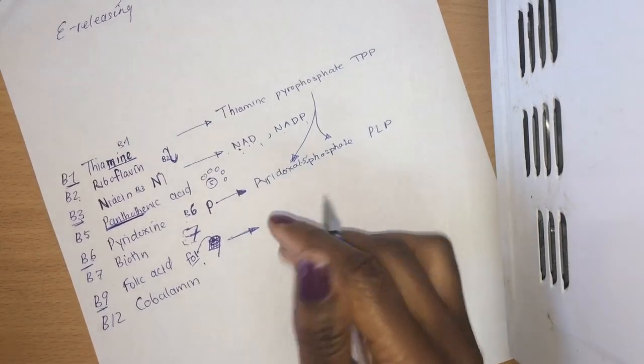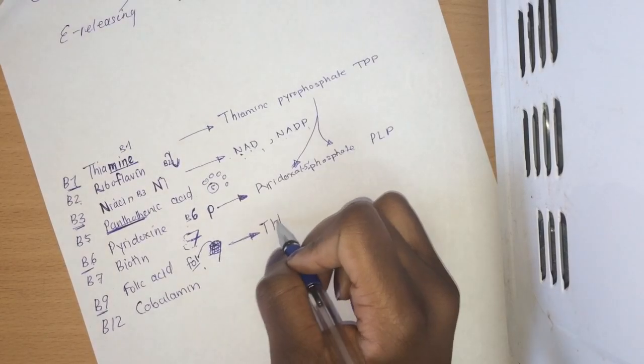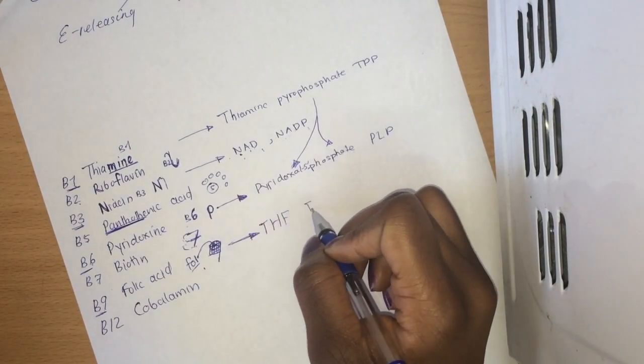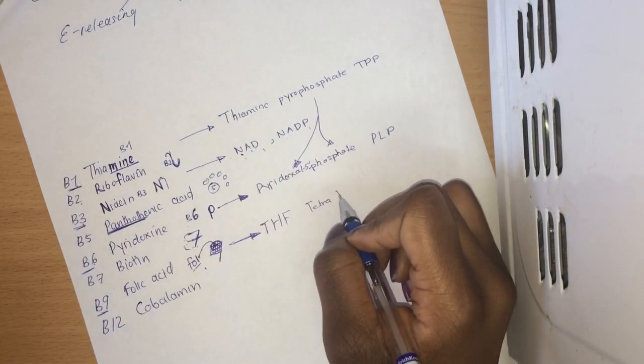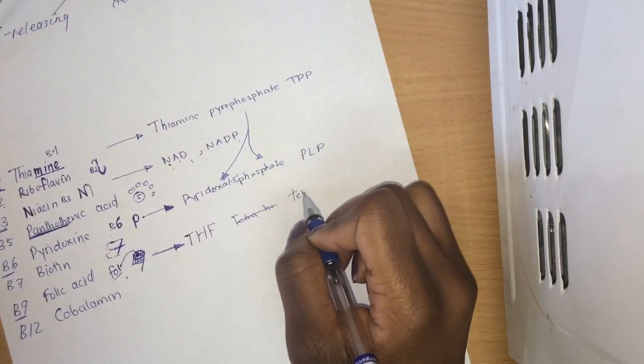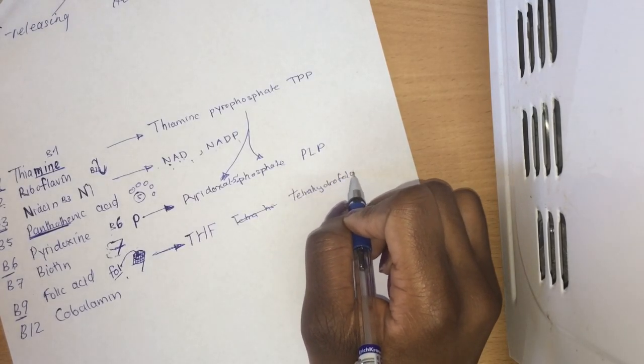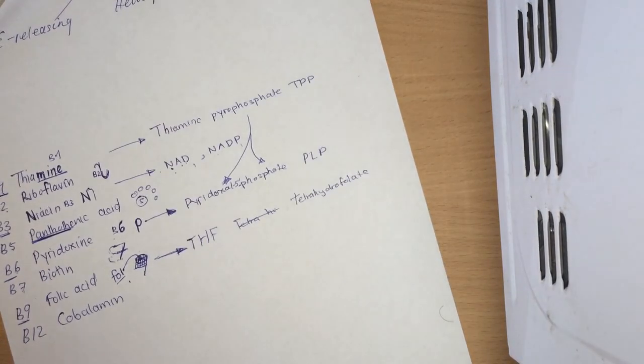Folic acid, the coenzyme is abbreviated THF which stands for tetrahydrofolate. How do you remember this? Folic acid has four letters in it, which is tetra, so tetrahydrofolate.